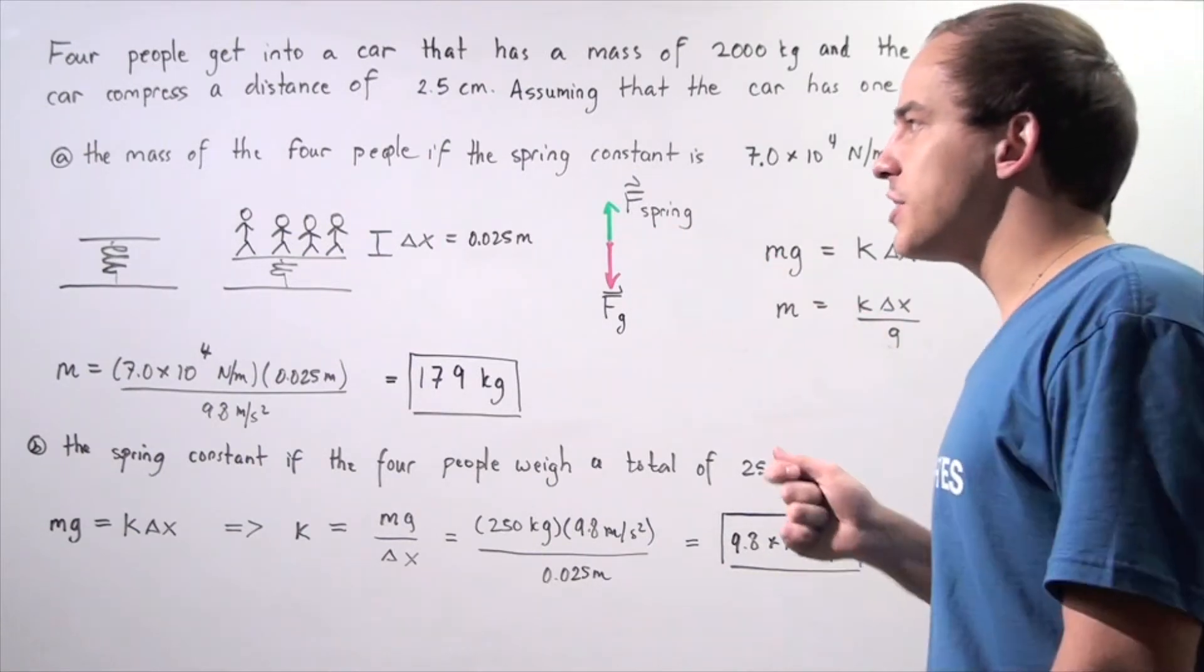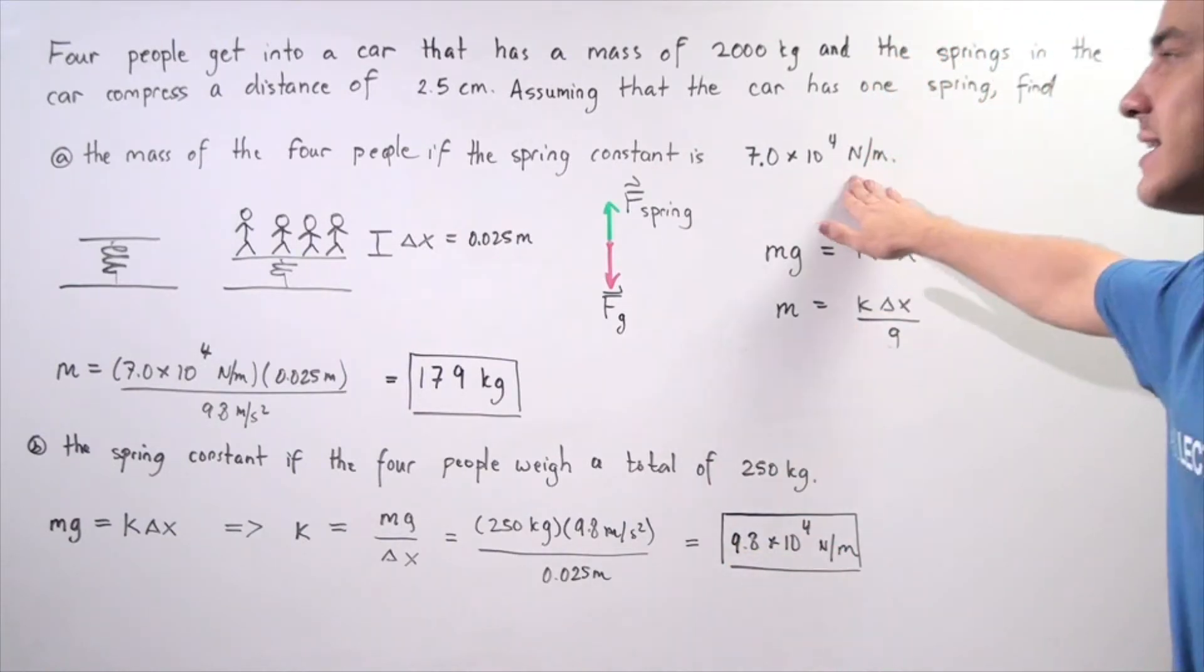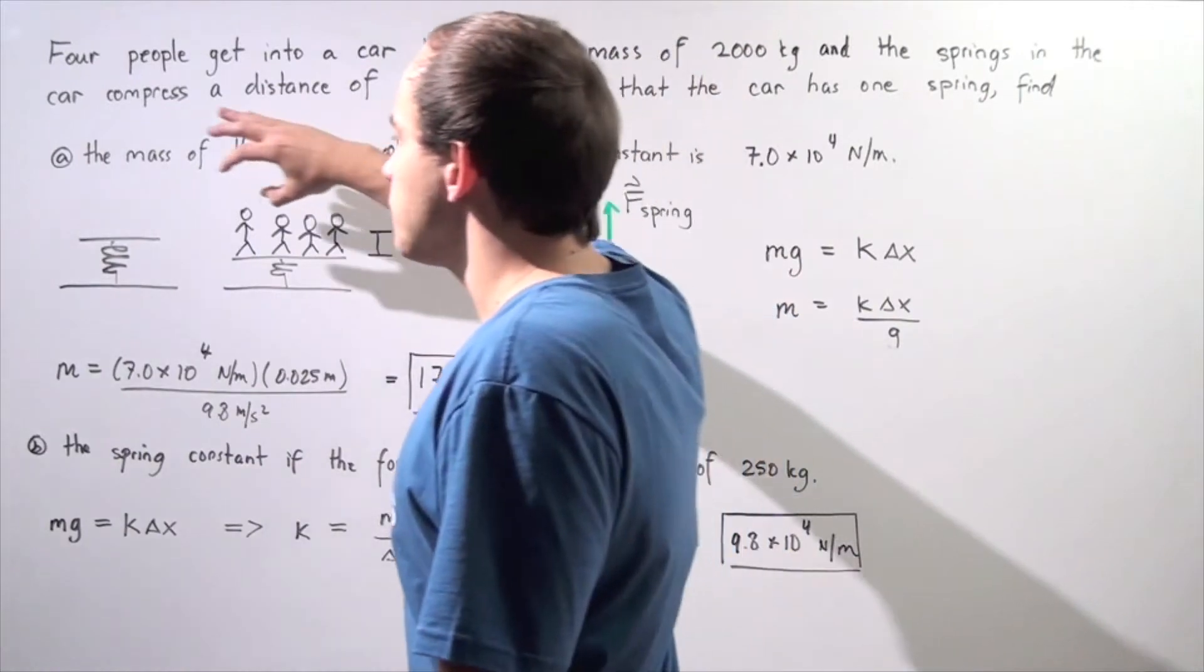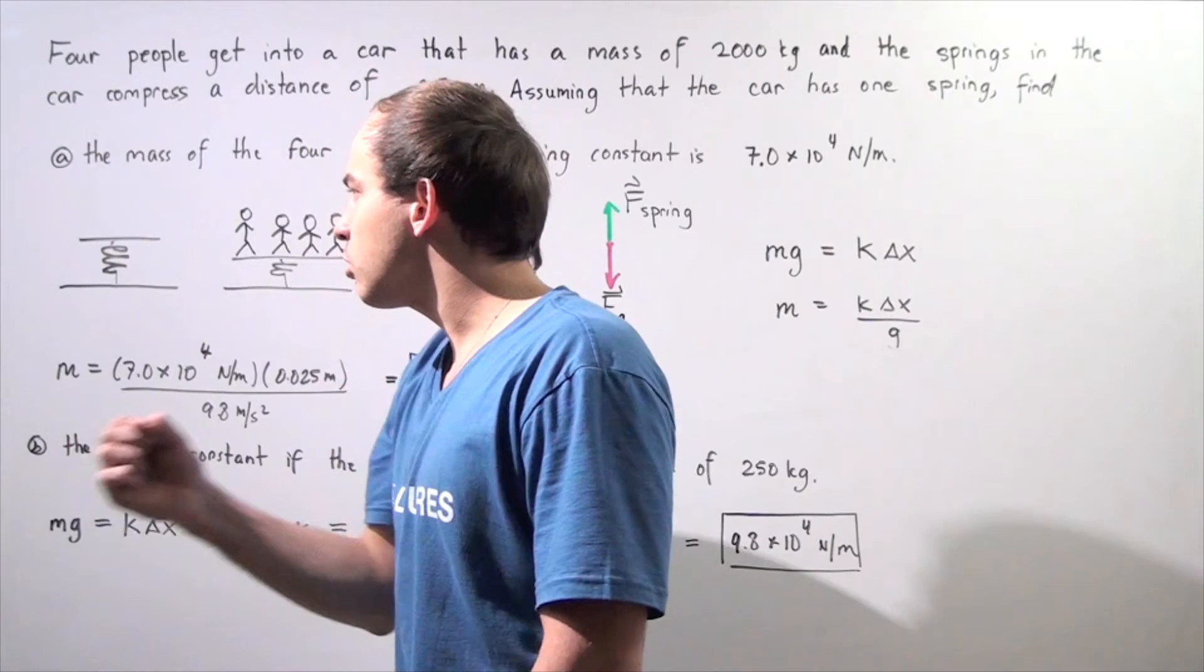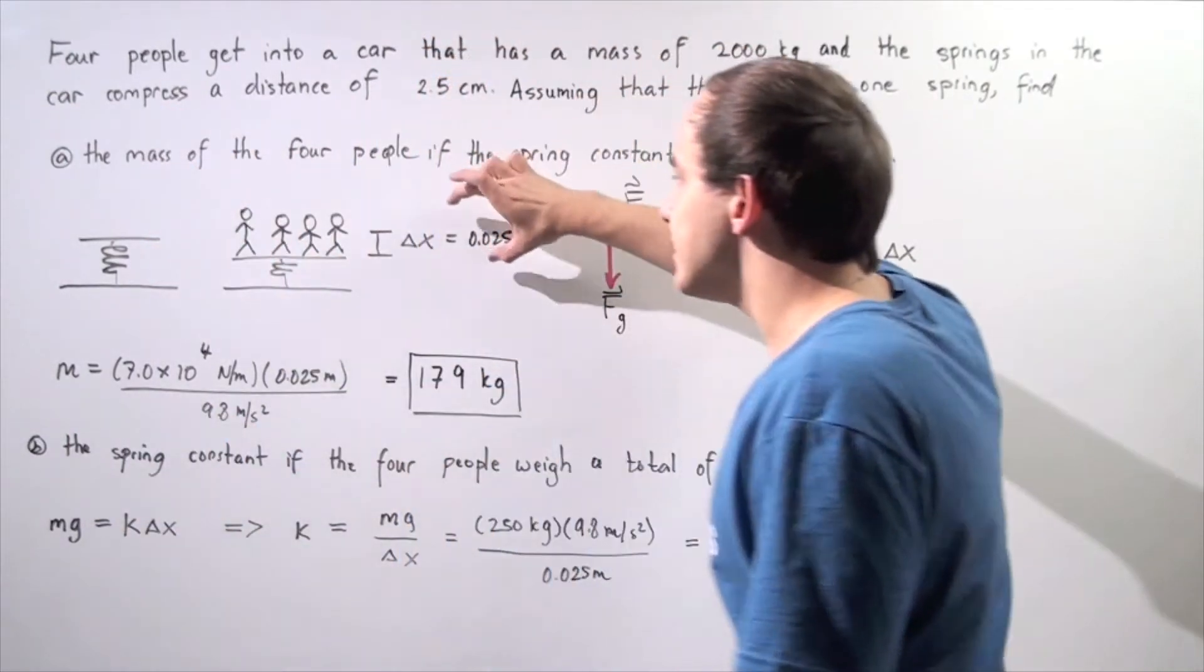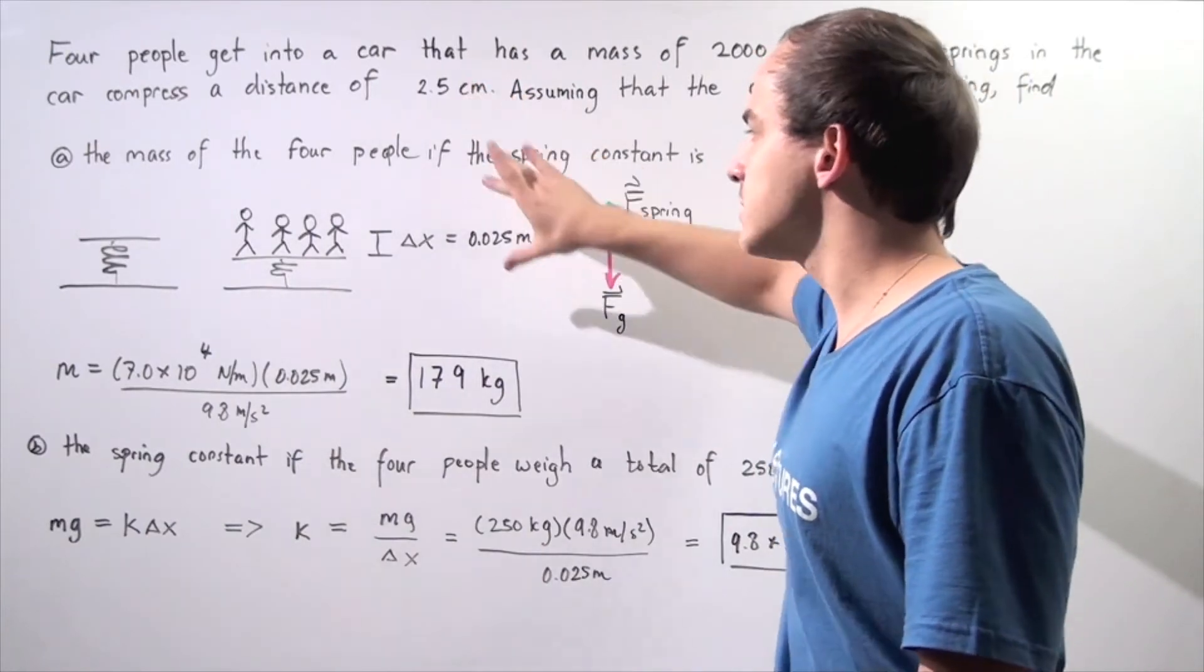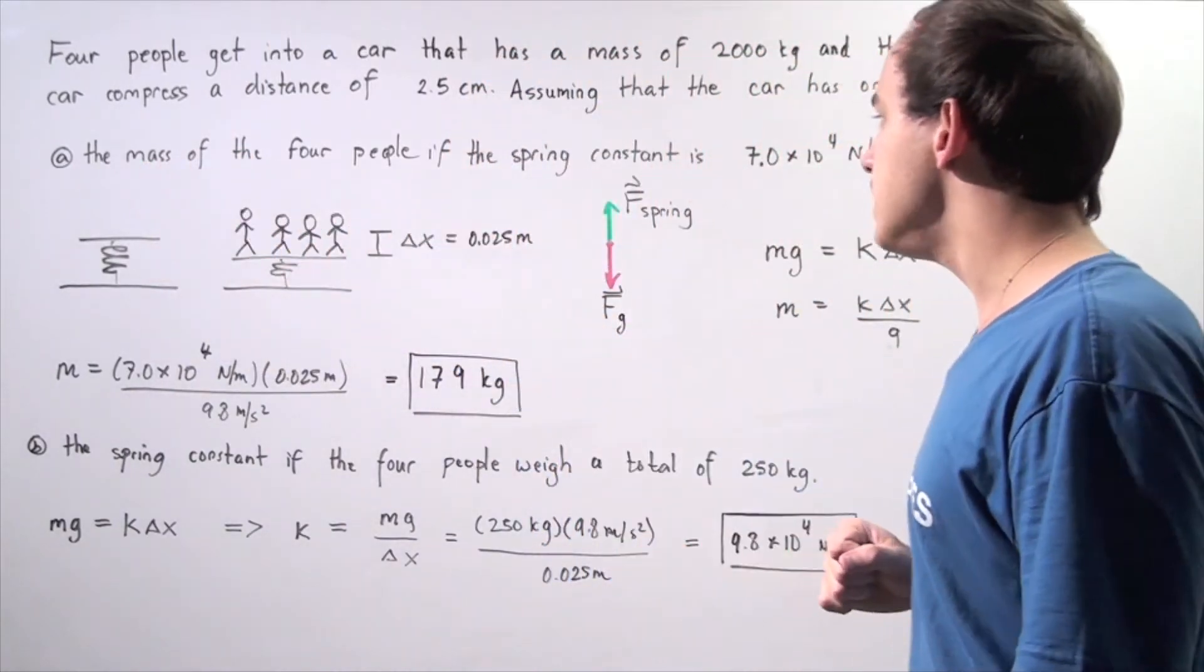Let's begin with A, the mass of the four people if the spring constant is given to you. Let's examine our diagram. We have a simplified diagram of the car. Assume four people get onto the following platform, which is our car, and the single spring in that car compresses a distance of 0.025 meters. We take this value and divide it by 1,000 to convert from centimeters to meters.